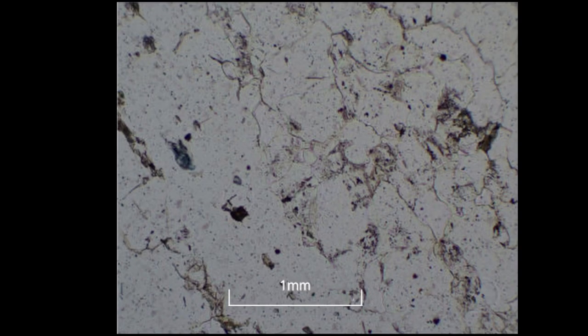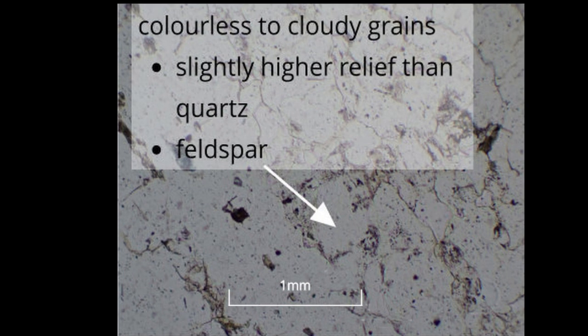Under higher magnification, it is possible to see mineral grains that are colourless to cloudy. These have slightly higher relief than the quartz grains and so stand out in the thin section. These grains are feldspar crystals.